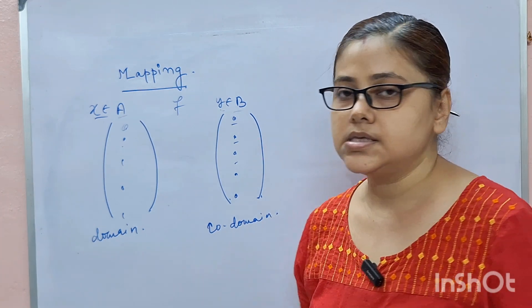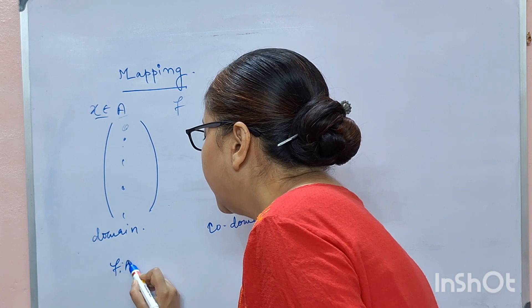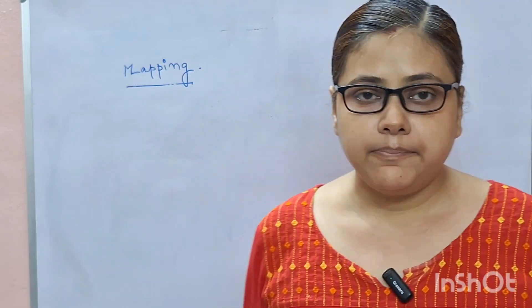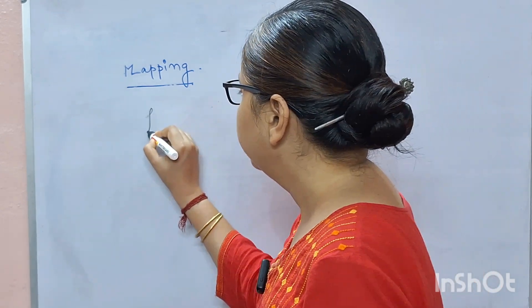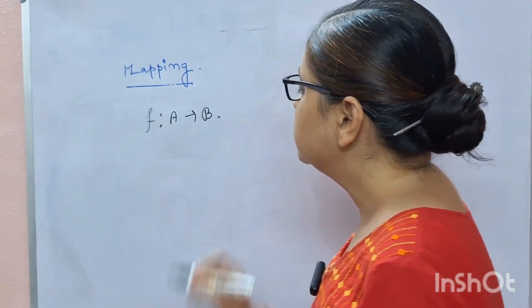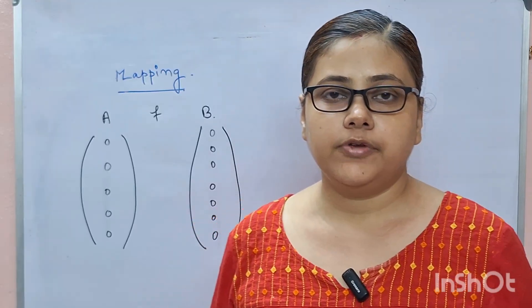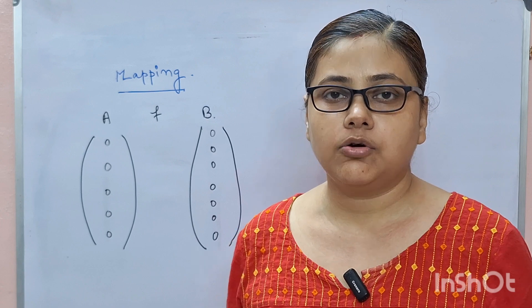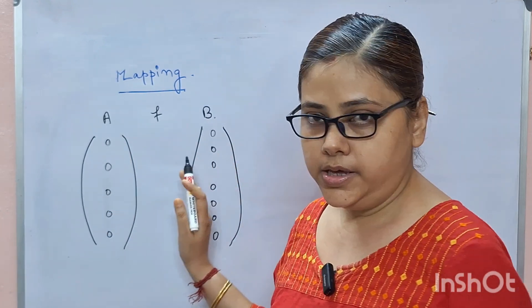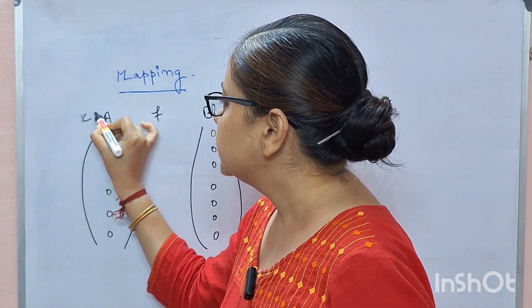It is symbolically written as F: A → B. A mapping is also known as a transformation or function. Suppose F is a mapping from A to B; then for each X in A, we can get a definite Y in B by the rule F.